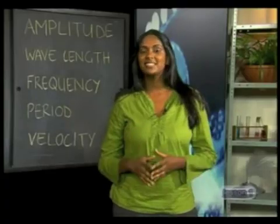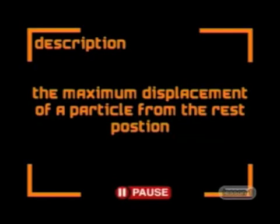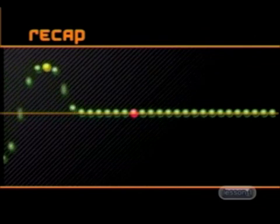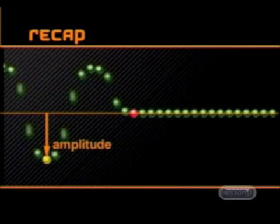Now for the next description. The maximum displacement of a particle from the rest position to the top of the crest, or from the rest position to the bottom of the trough, is the amplitude of the wave. The symbol for amplitude is capital A.